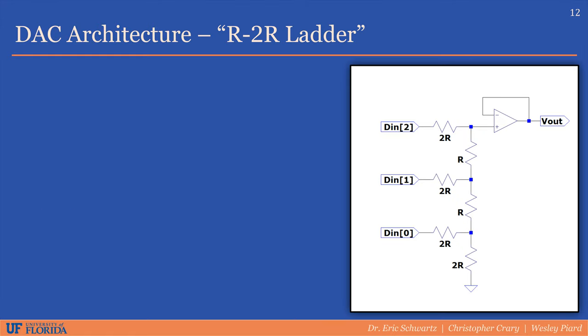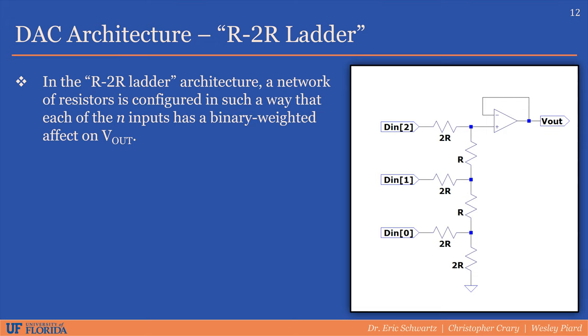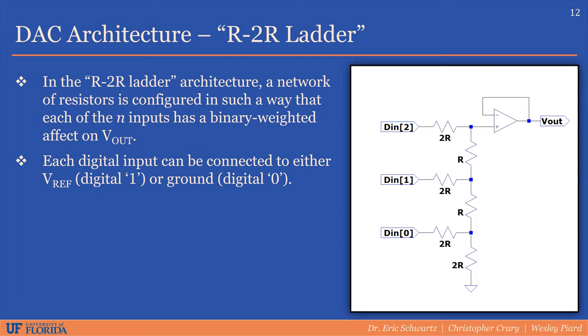To show how the R2R DAC may be implemented, let's look at an example. As shown in the circuit diagram, a network, or ladder, of resistors is configured in such a way that each input to the circuit has a binary weighted effect on the output voltage. Each digital input can be connected to either the reference voltage or ground, aka a 1 or a 0 respectively. Note that the op-amp in this circuit is just being used as a voltage buffer, and is not necessary for the theory of an R2R ladder to make sense. It just prevents the result from being affected if a resistive load is connected to the output of the DAC.